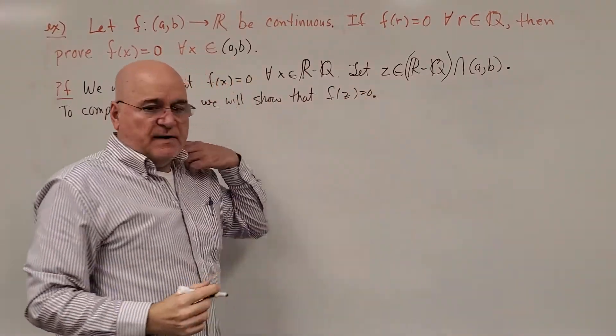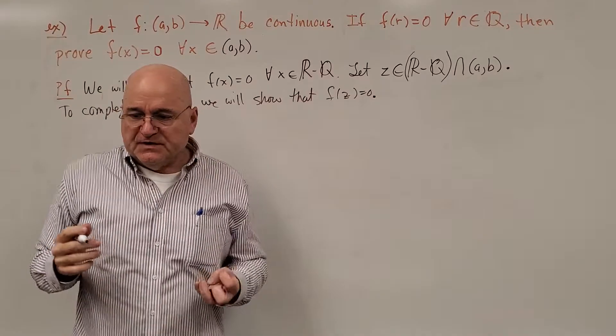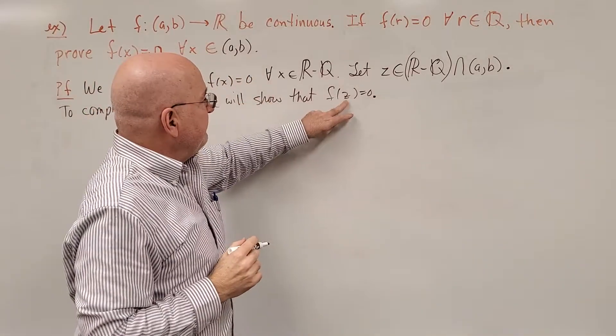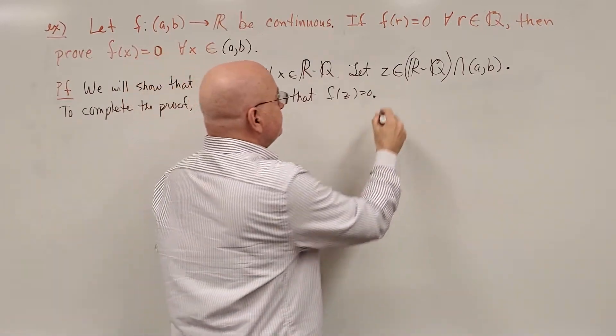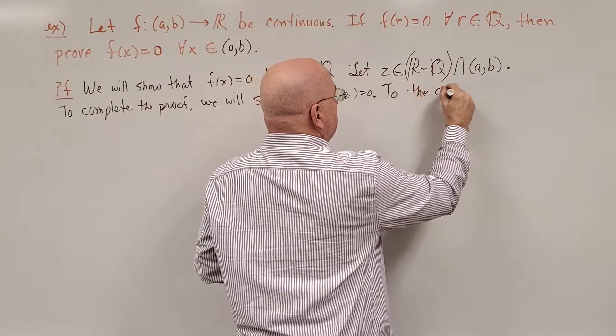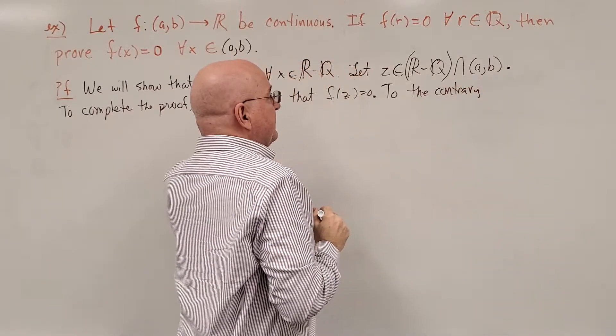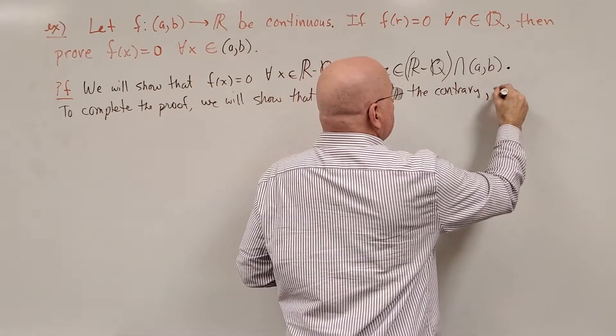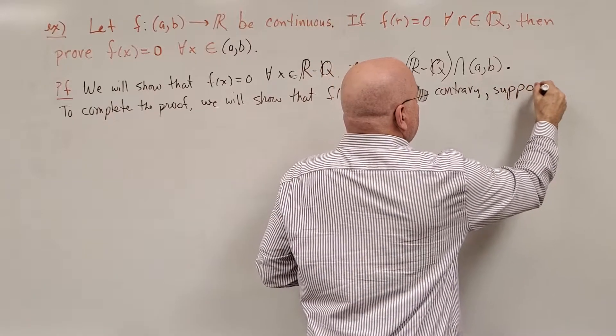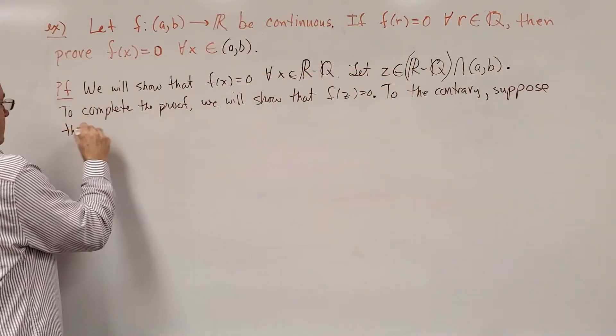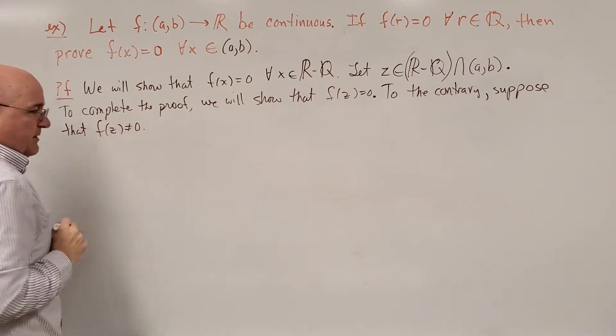And I think a nice, easy way to prove this would be by contradiction. Let's just suppose that f(z) is not equal to 0. So, to the contrary, for the sake of reaching a contradiction in a minute, suppose that f(z) is not equal to 0.